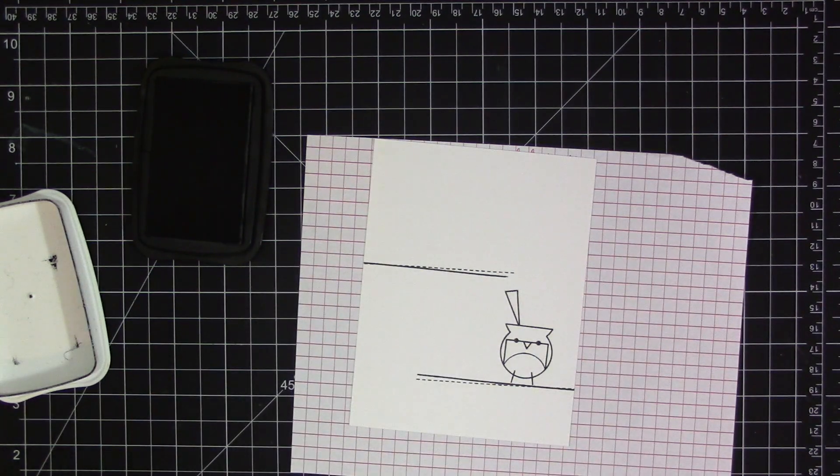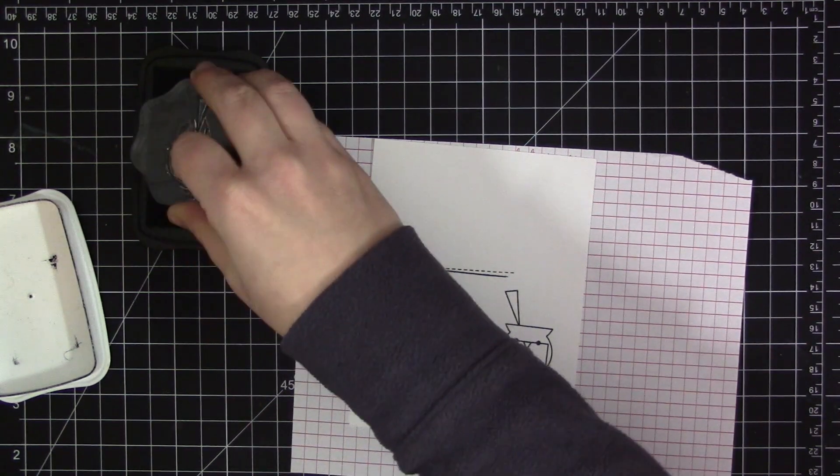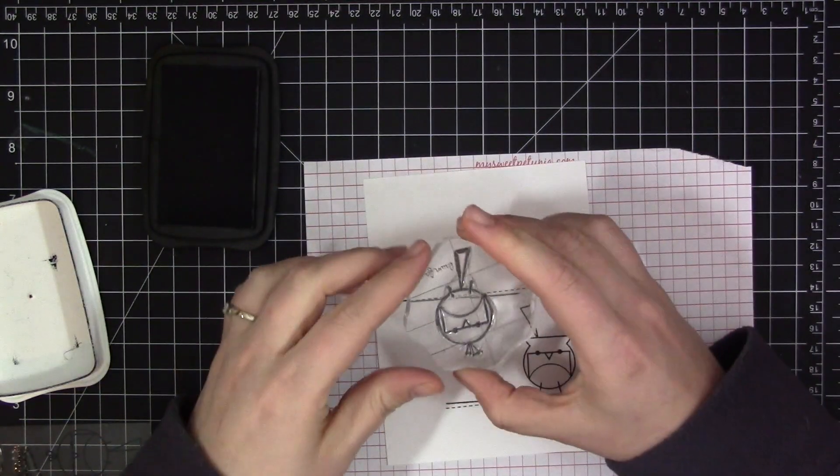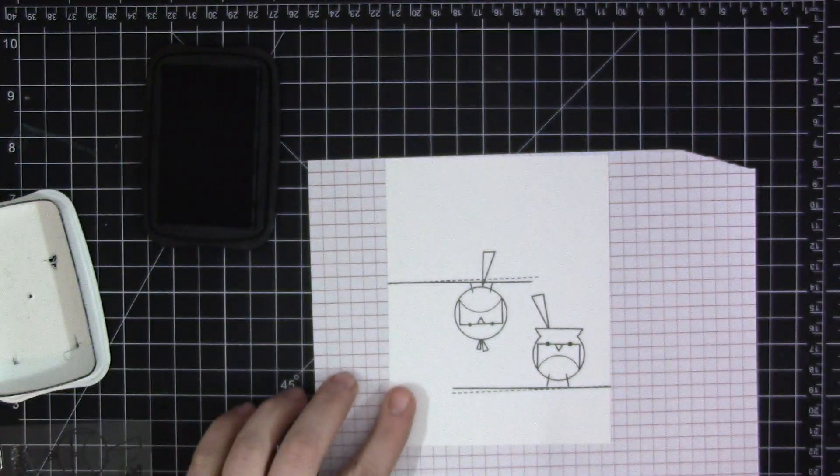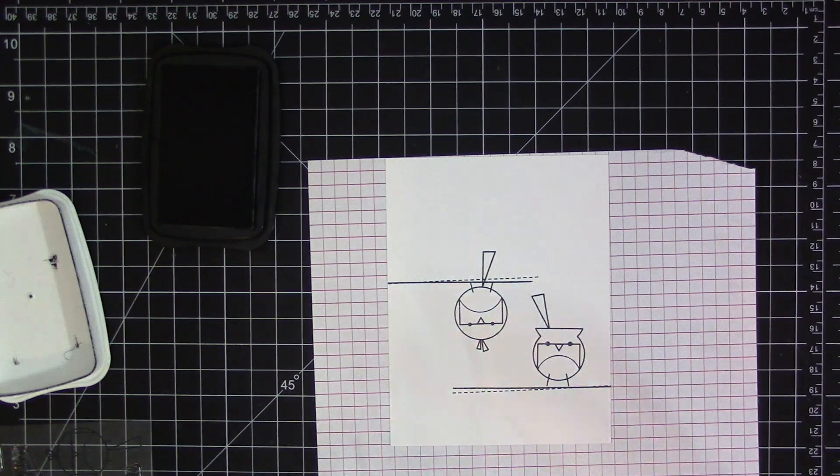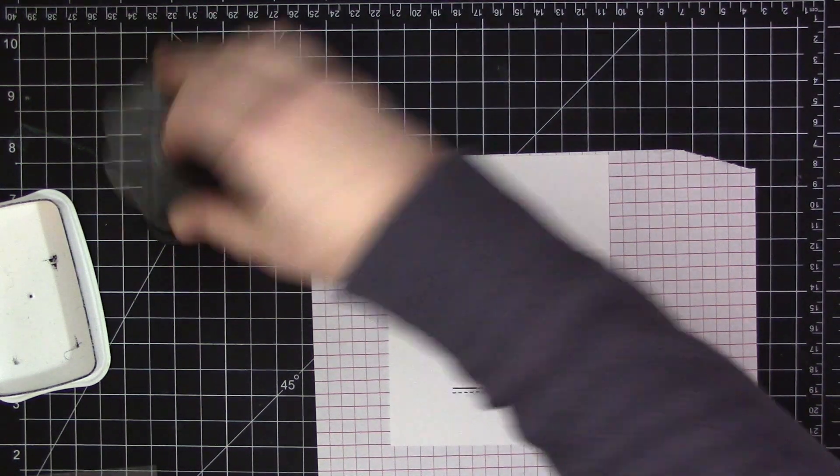I went ahead and first stamped the one that's sitting on top of the bottom wire. I'm stamping all of these images with Tuxedo Memento black ink just because I'm going to be Copic coloring, so I want to make sure that I don't have anything bleed. Then you can see there I stamped that second bird upside down off of that top wire.